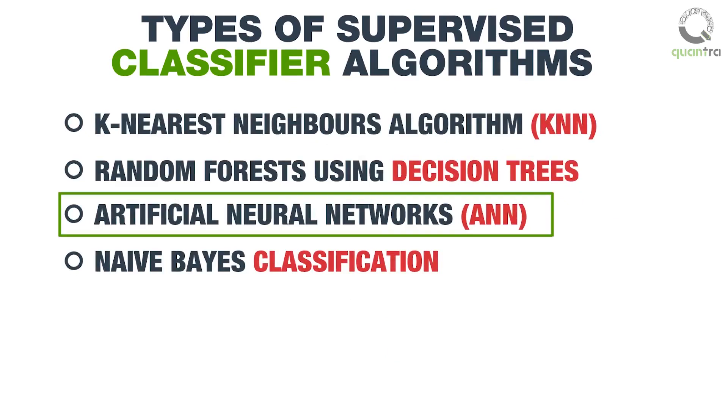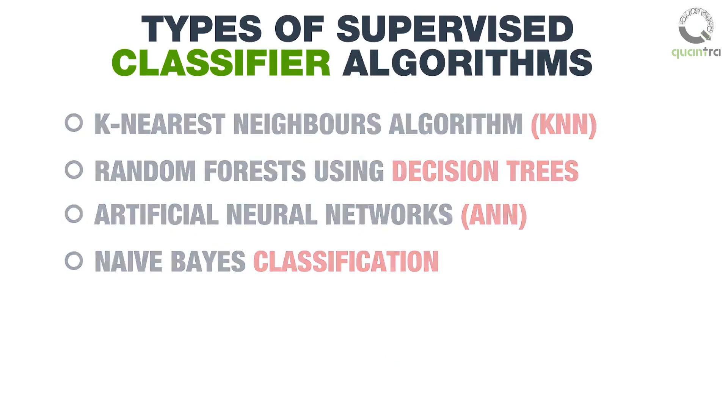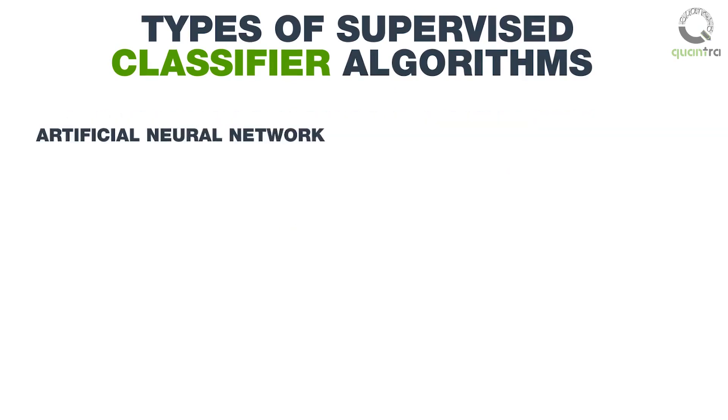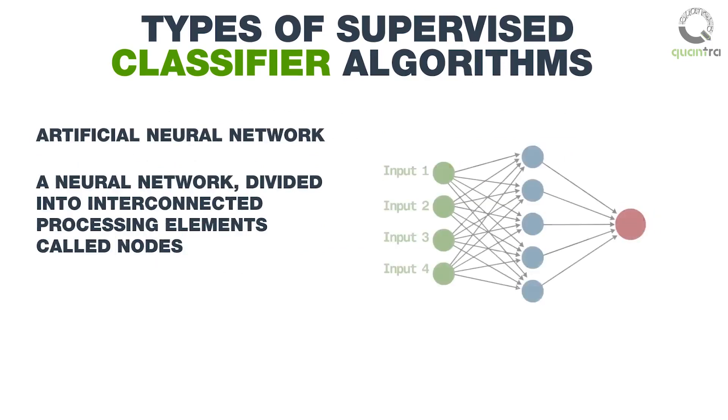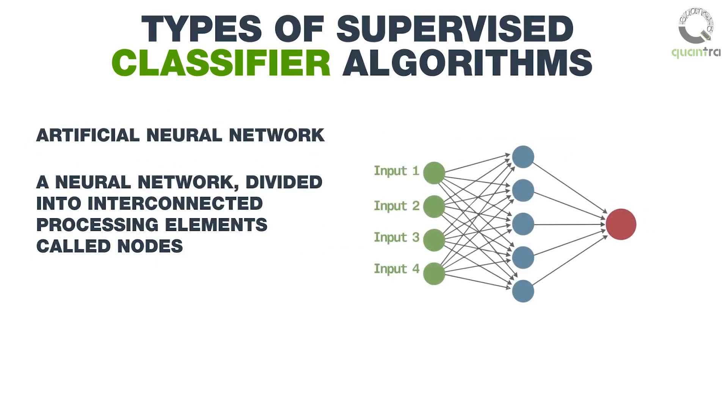Next we will discuss about artificial neural network. An ANN can be thought of as a neural network which is divided into interconnected processing elements called nodes. The outermost layer of the nodes is called the input layer, which receives the data elements.